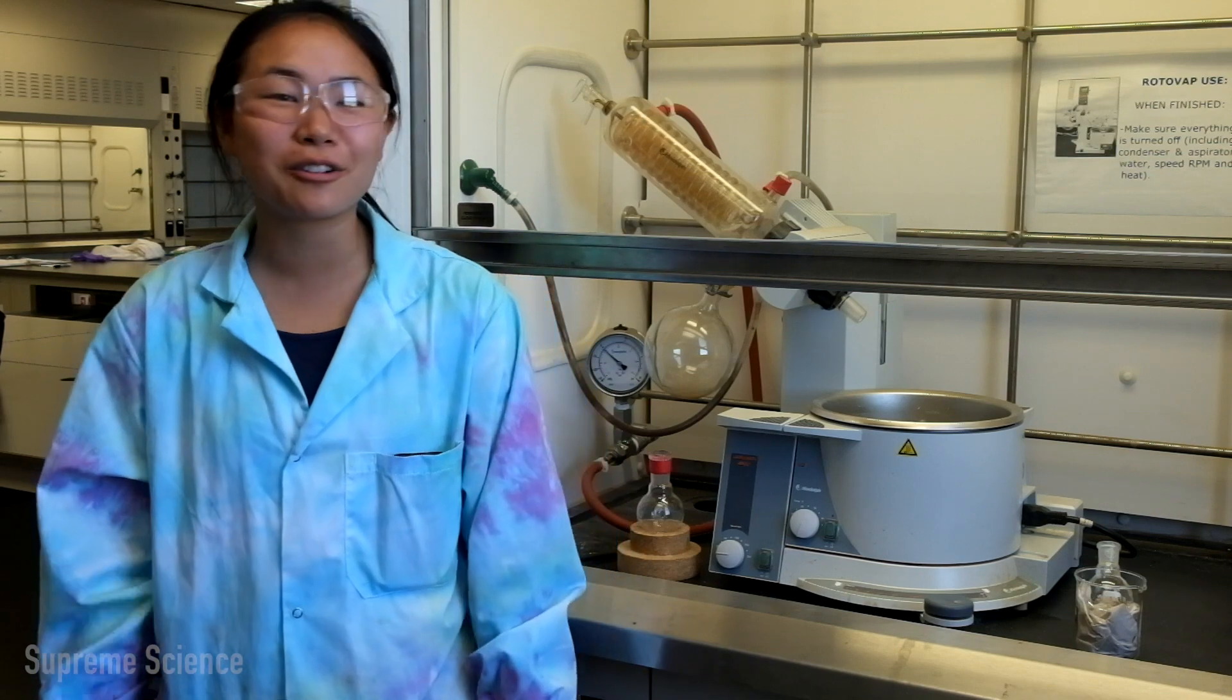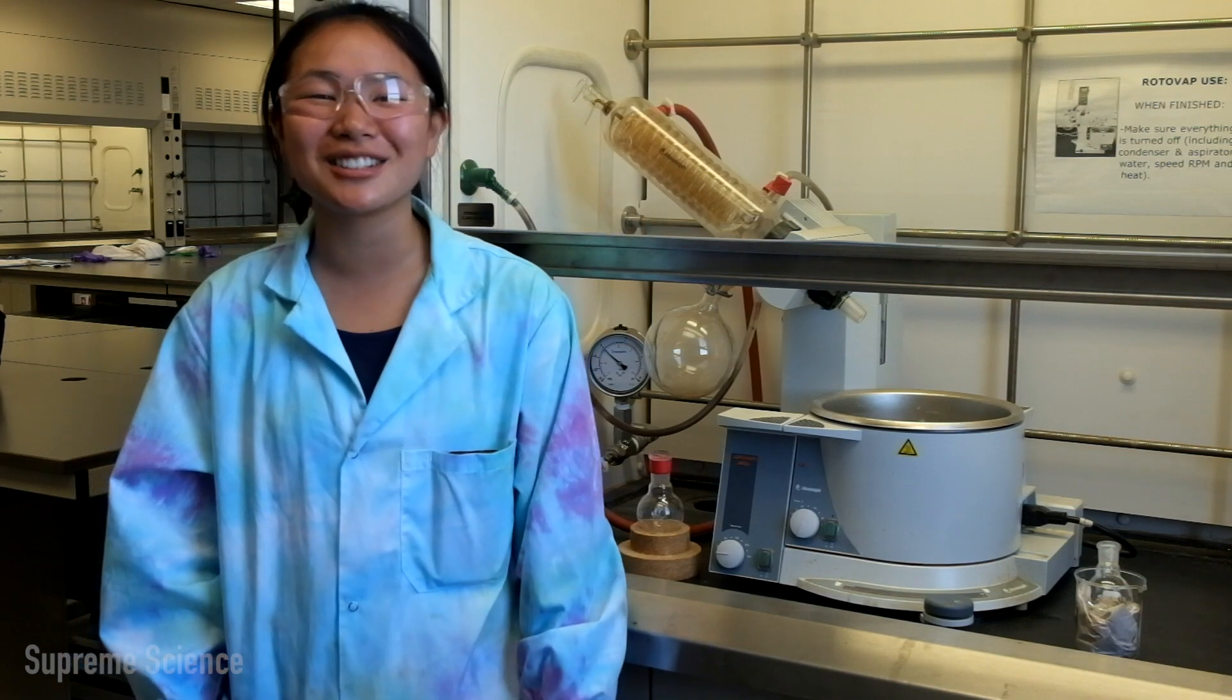So today we're going to talk about the Rotary Evaporator, also known as the Rotovap. It's generally used to obtain your product by removing the solvent. It does this by reducing the pressure inside your round bottom flask, but it also increases the surface area through rotation. And you can also heat your solvent.